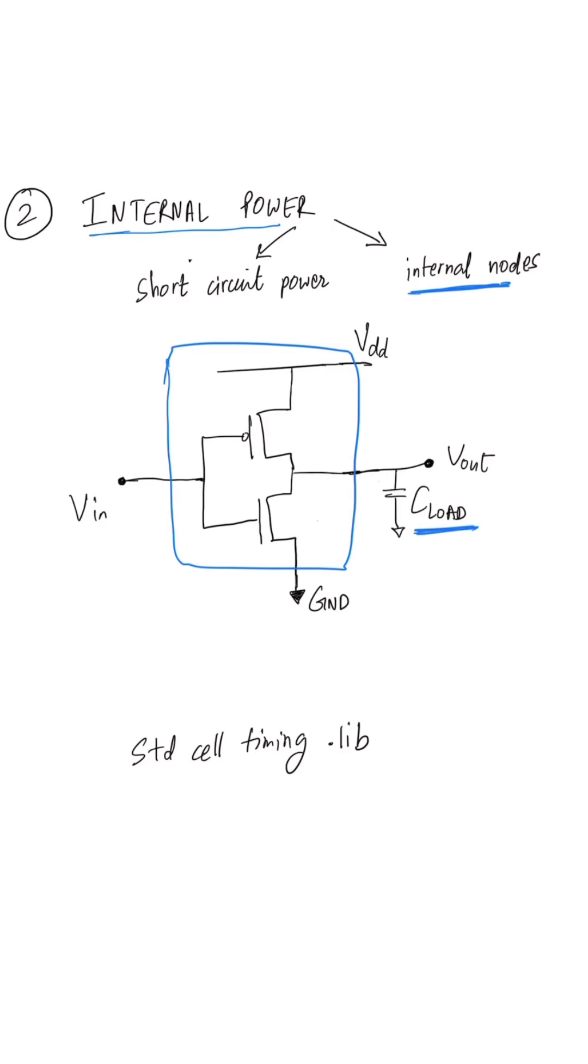So internal power is a sum of both short circuit power plus any internal nodes charging and discharging, and this internal power information is provided in the standard cell timing .lib files.